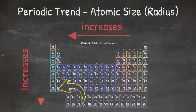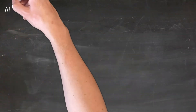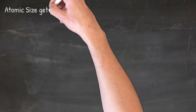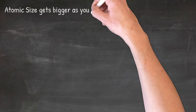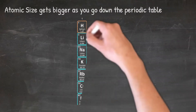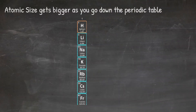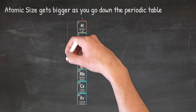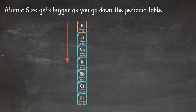Now that we know the trend, let's look at why the trend is the way that it is. First, let's look at why the atom gets bigger as you go down the periodic table. We will use group one, the alkali metals, to help us better understand. When we go down this group from hydrogen to lithium to sodium, we can see that we are adding an energy level each time.